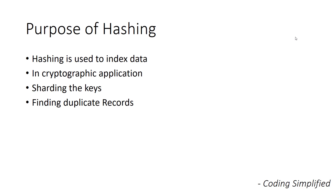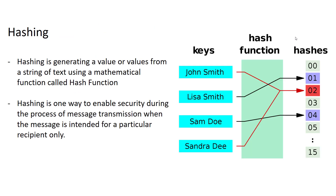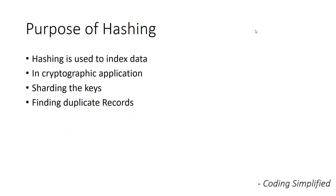Fourth is finding duplicate records. If we already have 'Lisa Smith' in the hash table and another time that same name comes again, we can directly go there and say this value is already filled — meaning this record already exists. Through that, we can find the duplicate record. There are several other applications of hashing too. That is why hashing is very much important.